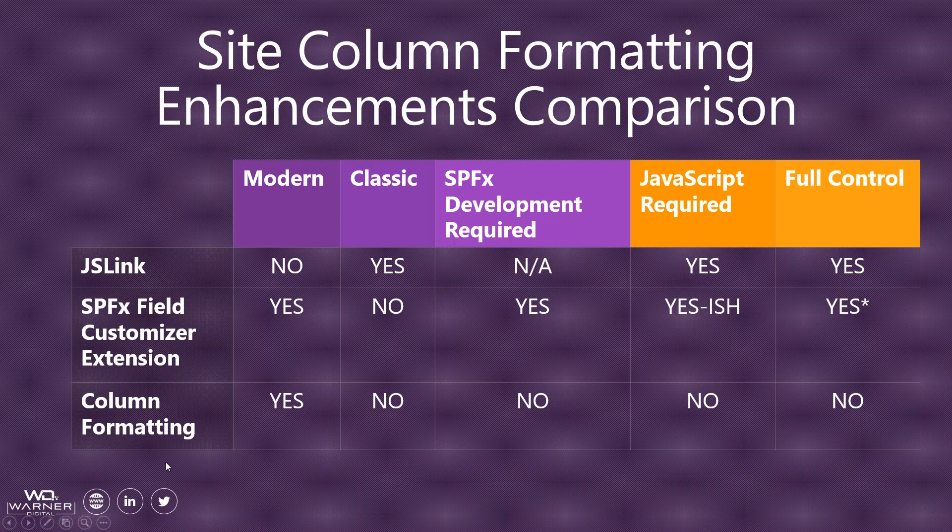Column formatting is available in modern but not classic. If you have a classic site, you can add the JSON to a site column, but it won't execute in classic view — you need the modern experience for it to be invoked. No SharePoint framework development is required, which is important since not everyone has access to deploy an SPFx solution to the app catalog. You just edit the site column directly at the site collection or list level, which empowers many non-development users.